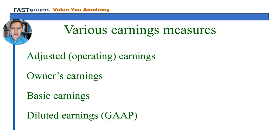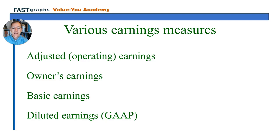Whether we have low growth, normal growth, or high growth, the denominator in all of these price-to-earnings valuations is earnings per share. However, FastGraphs has four different measures of earnings per share. We're going to go into great detail in other lessons about exactly how earnings are calculated, but for now it's important to just be clear that there are four different options available and to understand the differences between each.